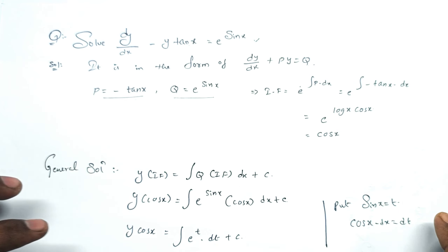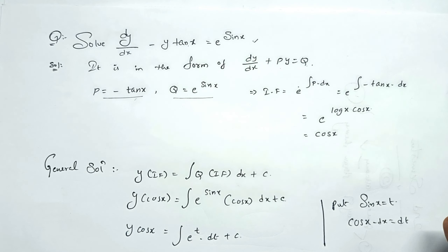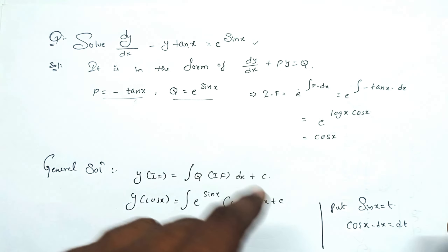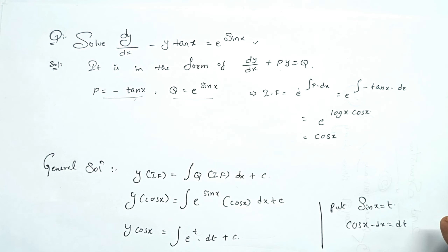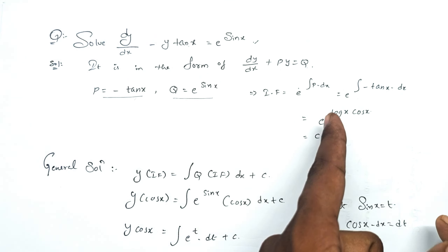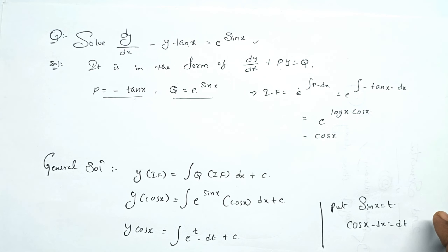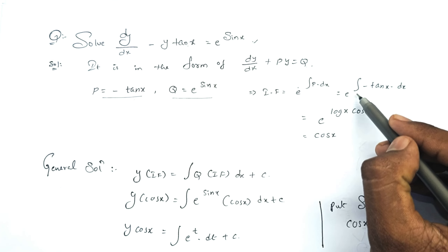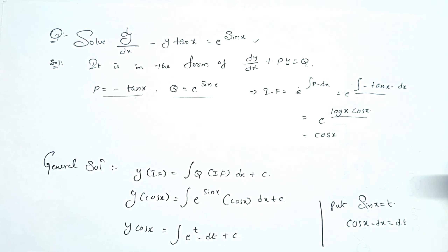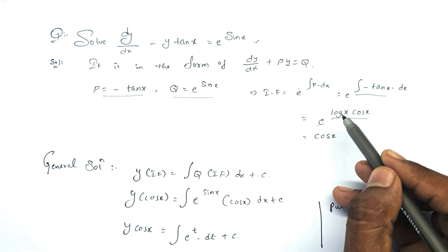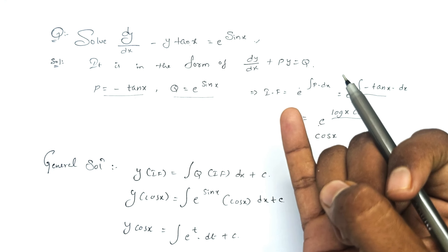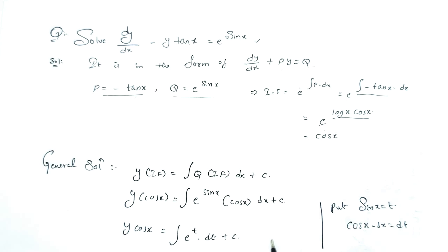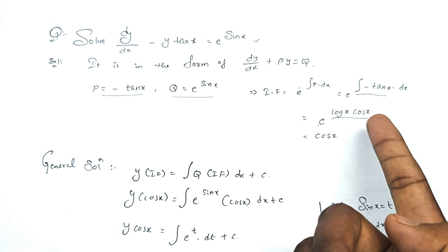Now find the integrating factor. The integrating factor formula is e^(∫P dx), which gives e^(∫−tan x dx). The integral of minus tan x is log(cos x), so we get e^(log cos x).